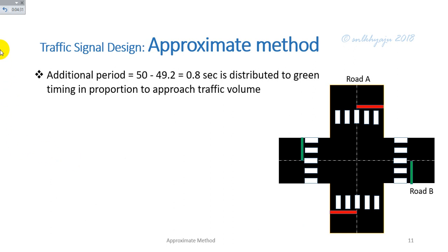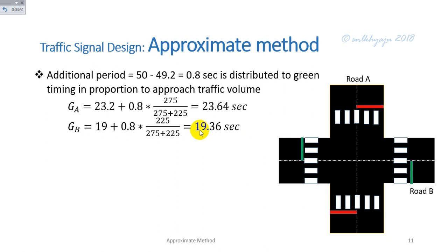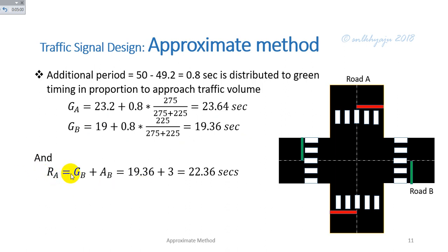The additional period of 50 minus 49.2 equals 0.8 seconds is distributed to the green timings in proportion to average traffic volume. Therefore, the final green time for Road A is calculated as 23.64 seconds and for Road B as 19.36 seconds. The red timing for traffic on Road A is the sum of the green time for Road B and the amber time for Road B, calculated as 22.36 seconds. Similarly, the red timing for Road B is 27.6 seconds.